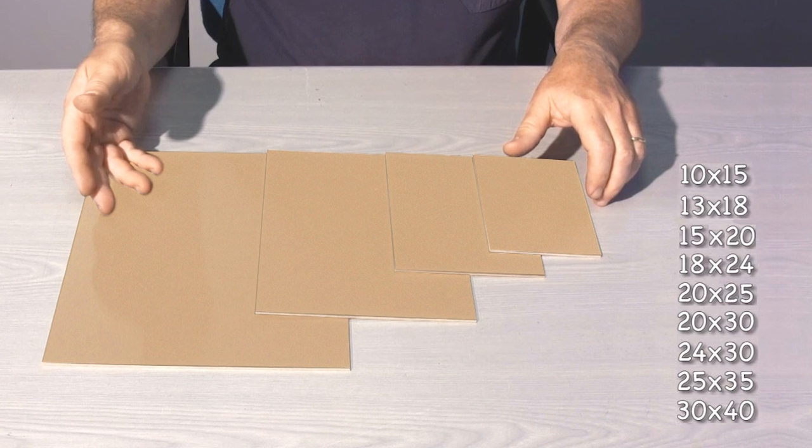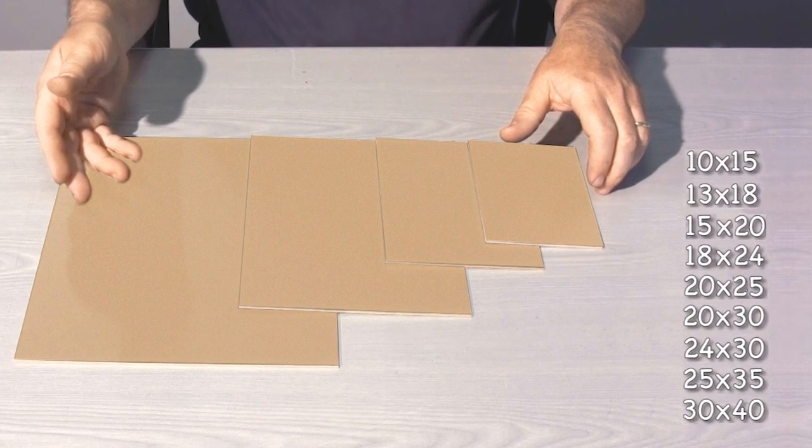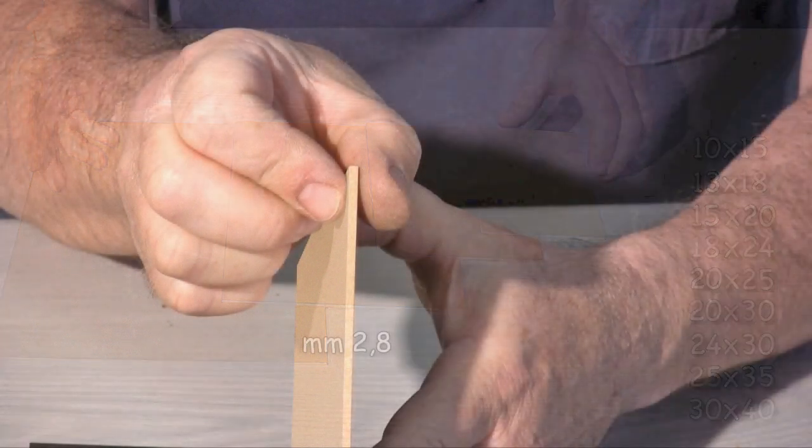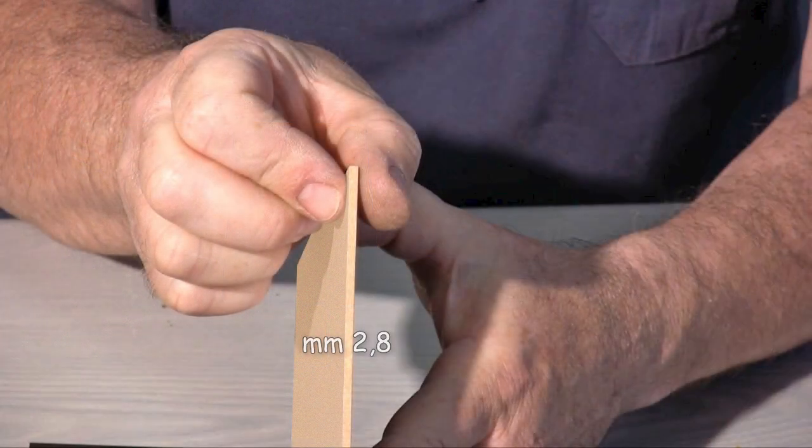Rinaldin supplies MDF backing boards also in natural color in the sizes you see, of thickness 2.8 mm.